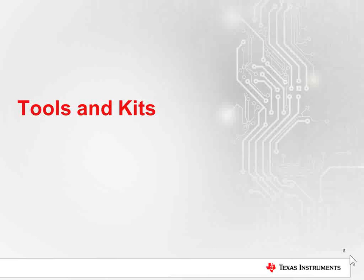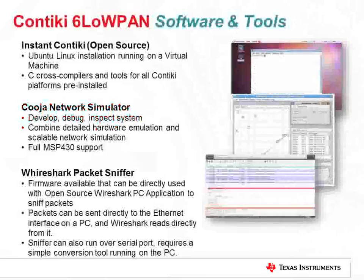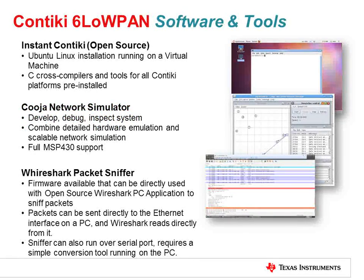Now let's talk about some software tools and development kits that you can use to get started. There are a number of software tools available free of charge on Contiki including the GCC compiler, the CUJA network simulator, and the Wireshark packet sniffer. All of these tools are available as a one-click download free of charge from Thingsquare. For more information, go to the TI 6LowPAN wiki where you can find the download link.